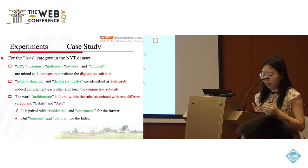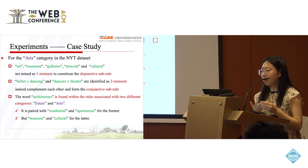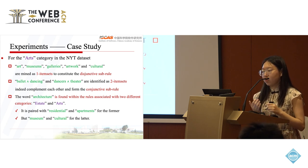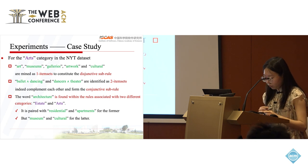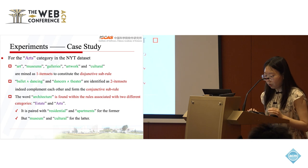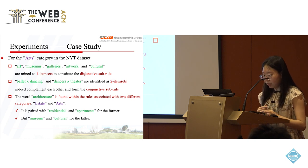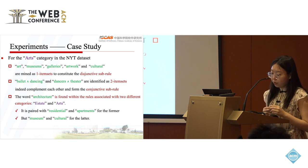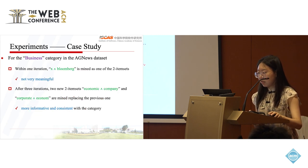From the case study, it can be seen that Rule Prompt can indeed mine meaningful rules which align with our common intuitions. For example, art, museum, and galleries are mined as one-item sets to constitute the disjunctive sub-rule. Besides, the word architecture is found in two different categories, but compared with residential and apartments for the former, versus museum and culture for the latter, that amplifies the ability of Rule Prompt to disambiguate easily confused categories.